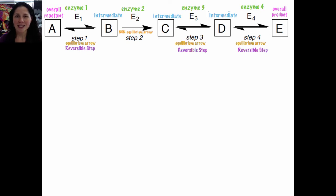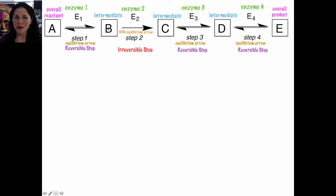Since step 2 is shown with a non-equilibrium arrow, this is a non-reversible or irreversible step. All of the molecules in this pathway — reactants, intermediates, and products — are connected. You can use Le Chatelier's principle to predict what will happen to any of the intermediates, reactants, or products along this pathway. For example, Le Chatelier's principle would suggest that if I increase the concentration of A, I would shift the equilibrium in the forward direction. Therefore, I would make more B, B would be converted into C, I would make more C, and eventually more D and more E. So increasing the concentration of A would eventually result in an increase in concentration of E.